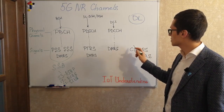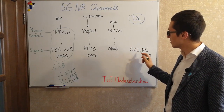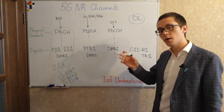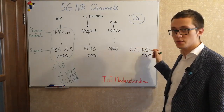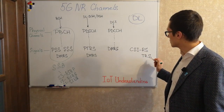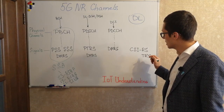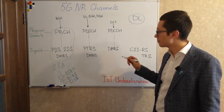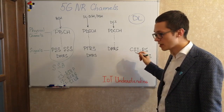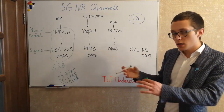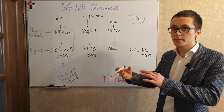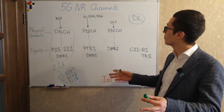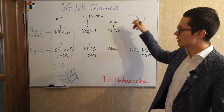Apart from all of these channels, we have the channel state information reference signal (CSI-RS) to estimate and measure CQI reports for each beam in the case of beamforming. And we have the tracking reference signal to track each user — it may be configured per user to track time and frequency and to mitigate the Doppler spread effect. That was some information about 5G NR channels in the downlink direction.